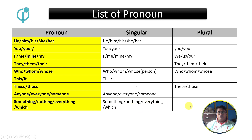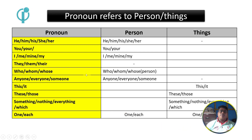Let's take a look at the screenshot. The first thing is that certain words can indicate a person. For example: he, him, I, me, my, who, whom, whose — these can indicate a person.